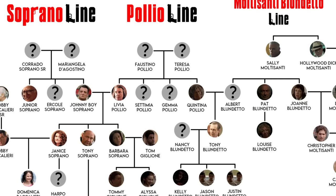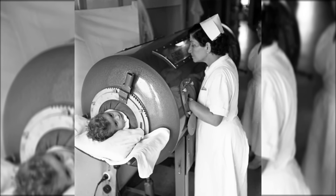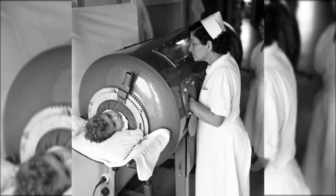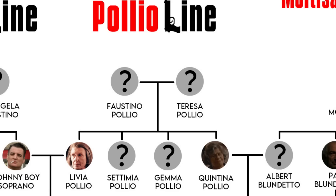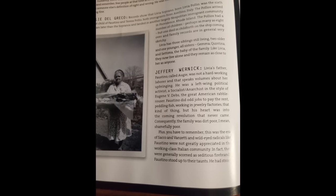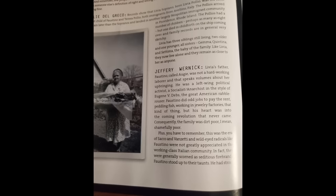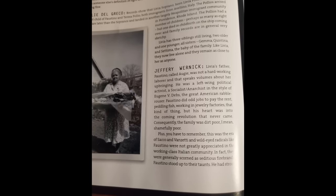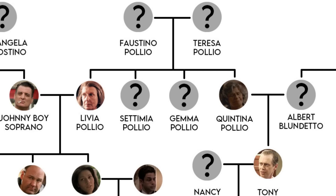We'll skip Tony for now and move back to Livia's family, the Polios. I don't know if Polio is a common Italian name, but the idea that Livia is named after a debilitating disease is very much in line with her character. Livia's parents were Faustino Polio — nicknamed Augie — and Teresa. We don't know much about Augie; he was apparently abusive to Livia, and the book goes into detail about how he was a socialist and their family was very poor. Livia mentions this on the show. They had three other daughters besides Livia. Setima is the sister that Livia was talking to when she pretended to have dementia in season one — the only thing we know about her is that she's dead.